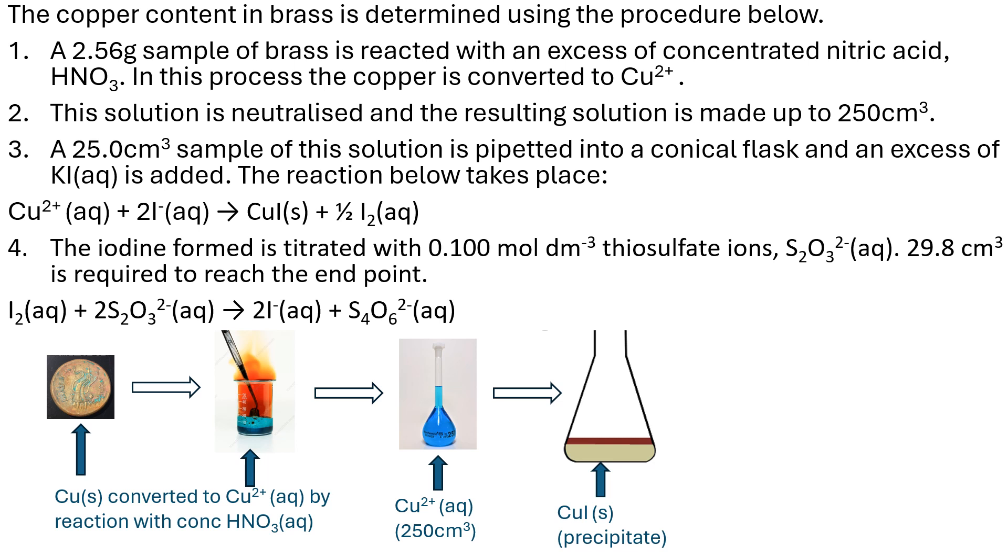The copper iodide precipitate is a brownish color, represented in that diagram. Finally, the iodine formed is titrated with 0.100 mol dm⁻³ thiosulfate ions, and 29.8 cm³ is required to reach the end point.